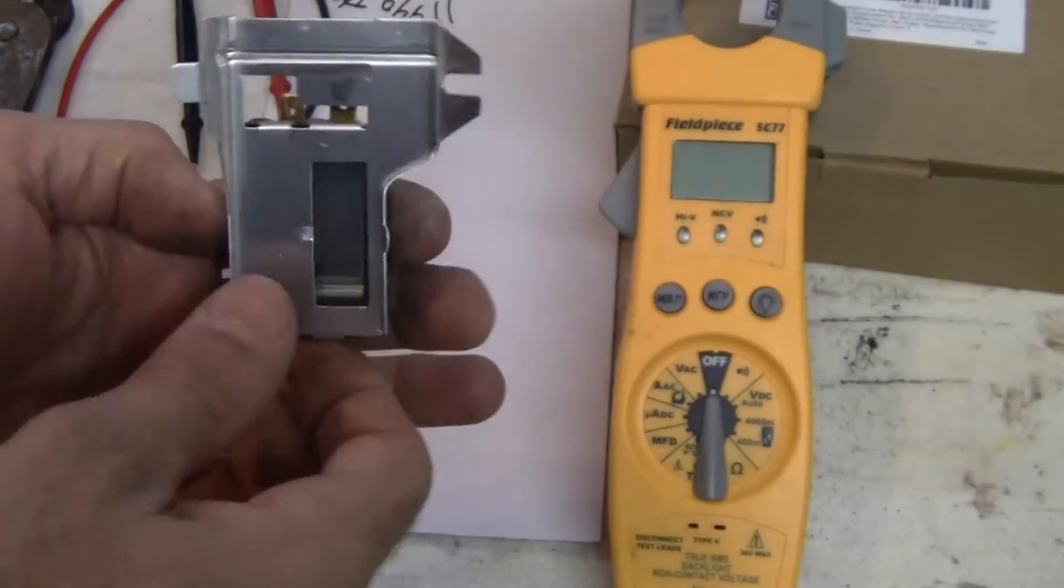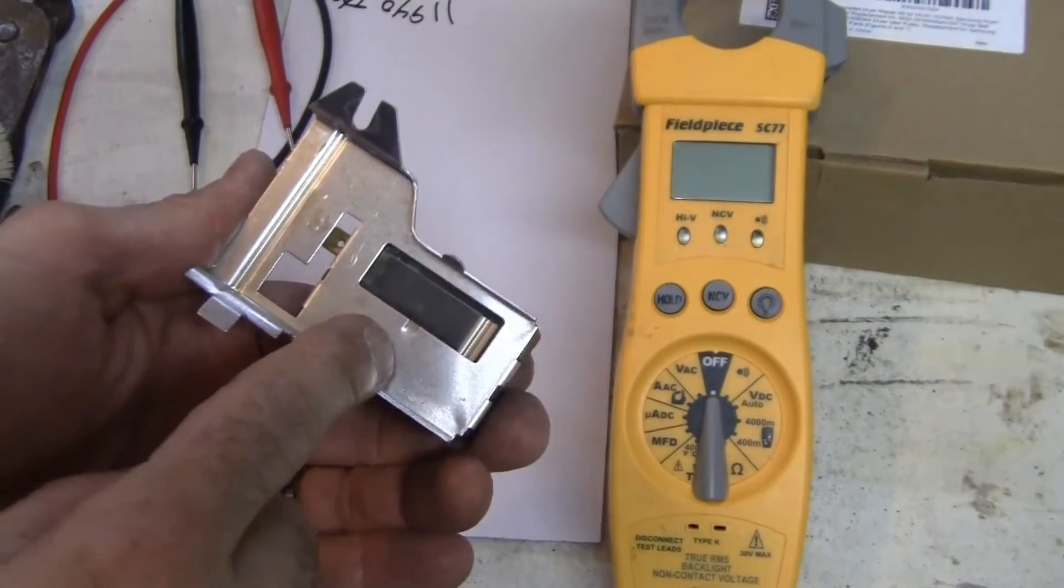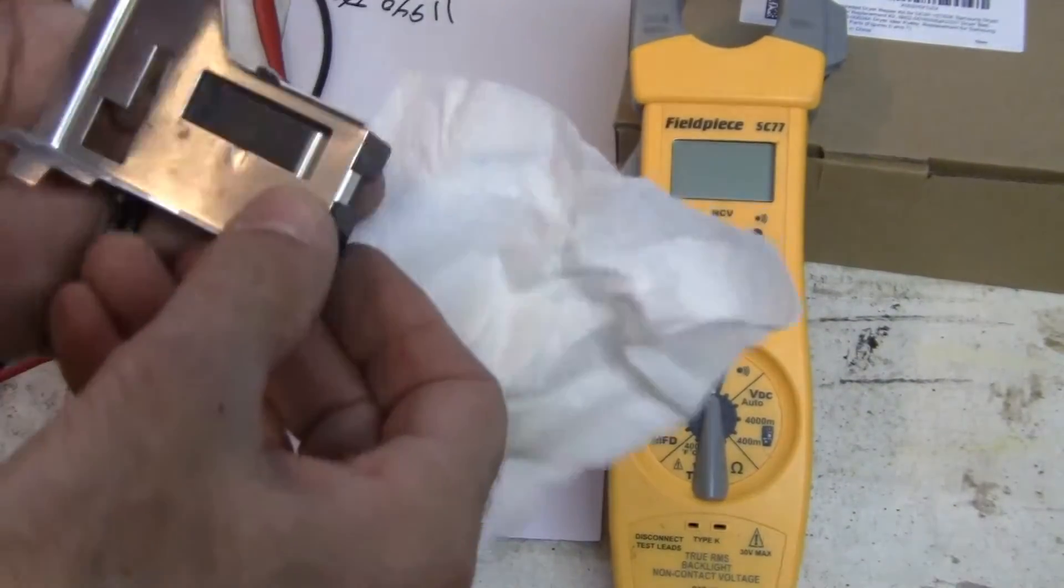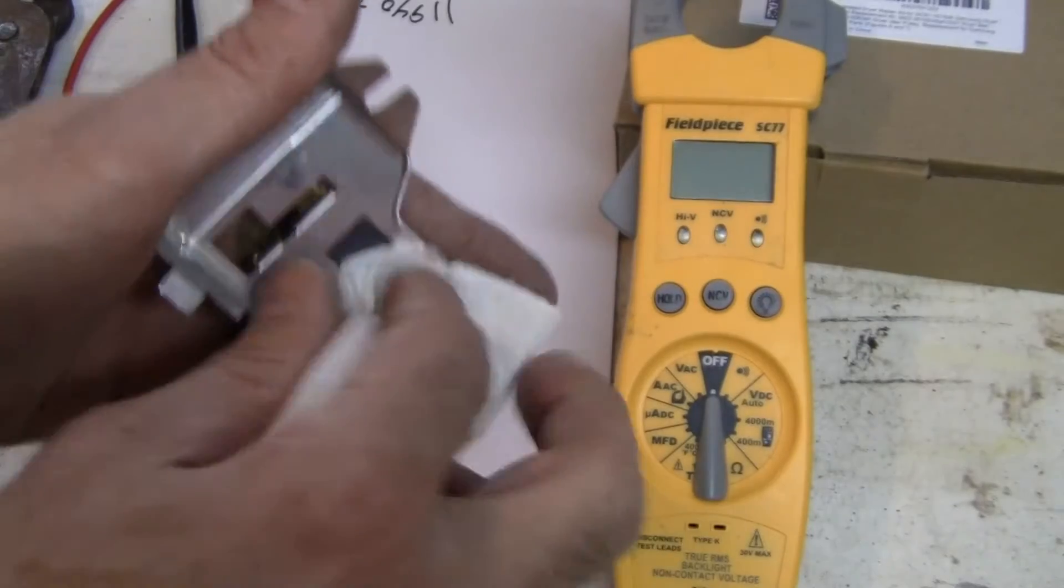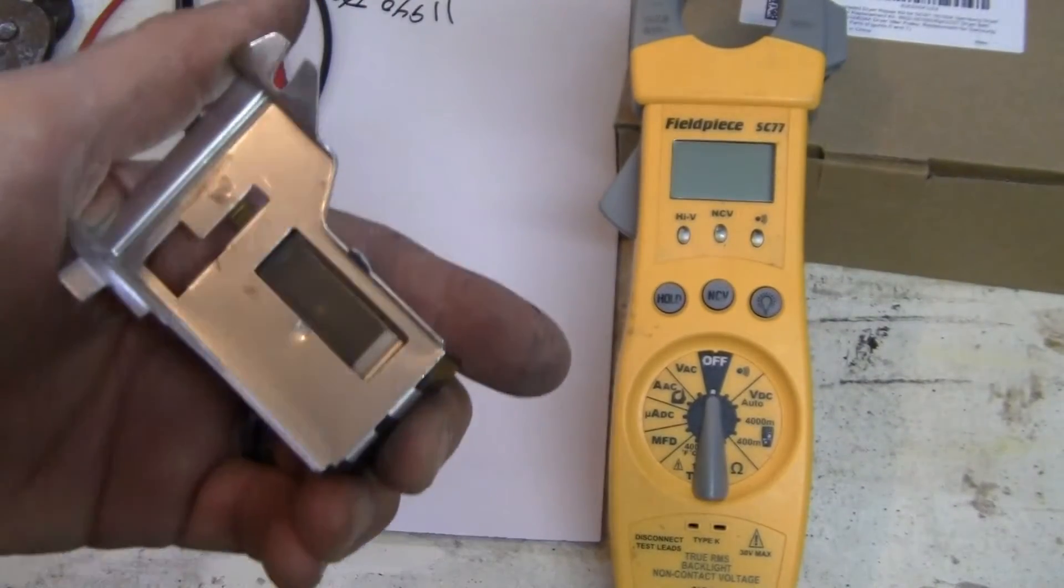All right, so there's not much to this. There's a little window right there. We can make sure that the window is clean, just to make sure that there's no obstruction from it seeing the flame.